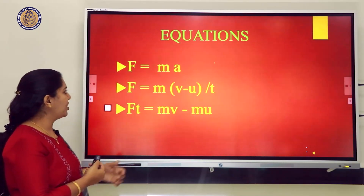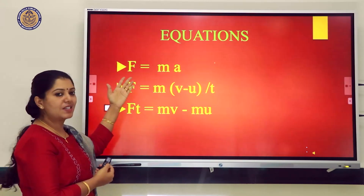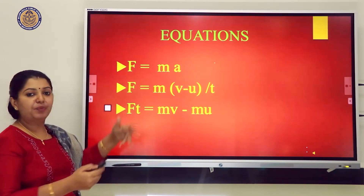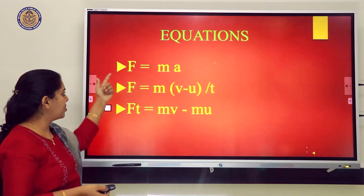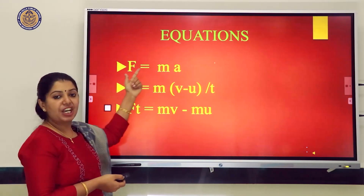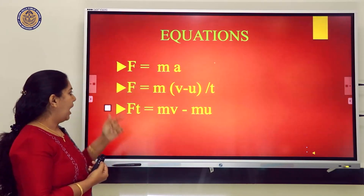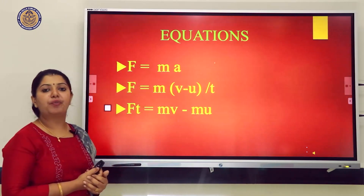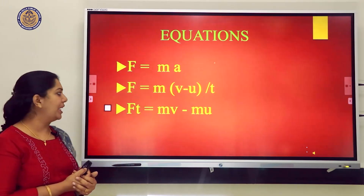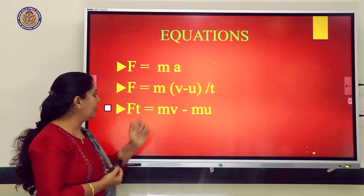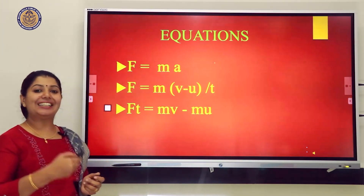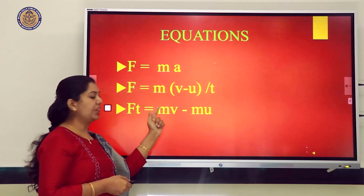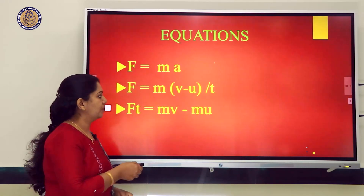Other forms of the Second Law equation: F = MA, and F = M × (V − U) / T. Cross-multiplying gives another equation: FT = MV − MU.